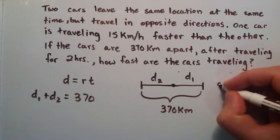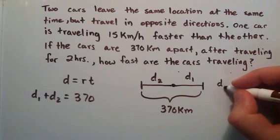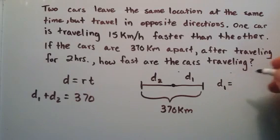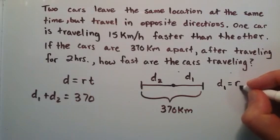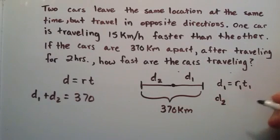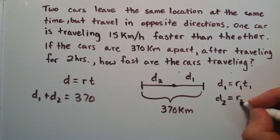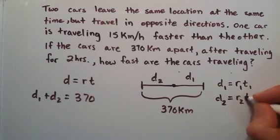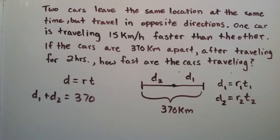Now we need to realize that the distance car one has traveled at any given time is equal to the rate car one is traveling at multiplied by the time that car one has traveled at that rate. And the distance car two has traveled is equal to the rate that car two is traveling at multiplied by the time that car two has traveled at that rate.